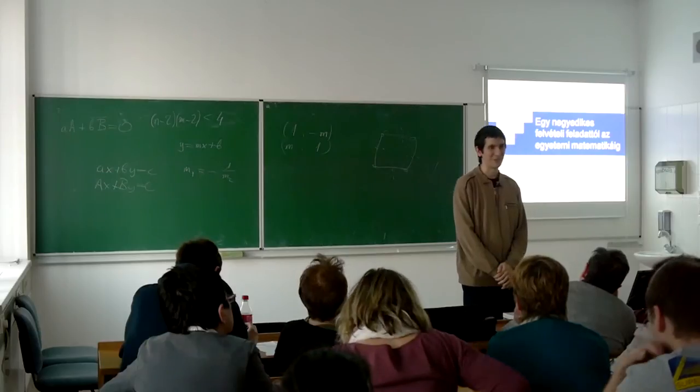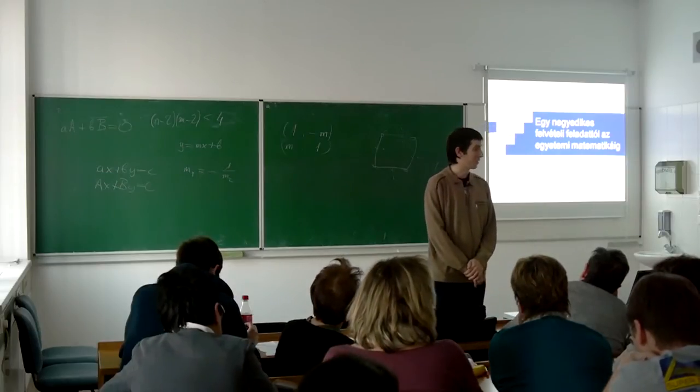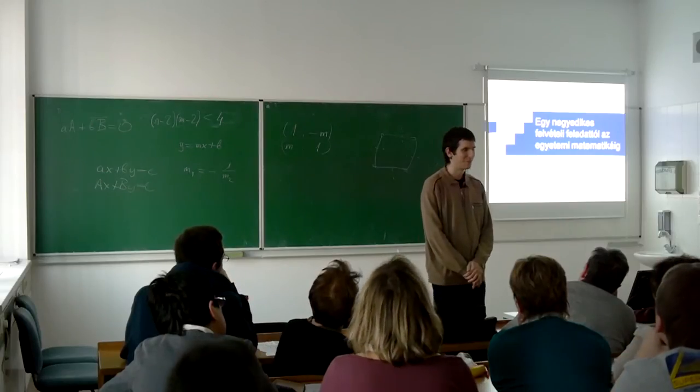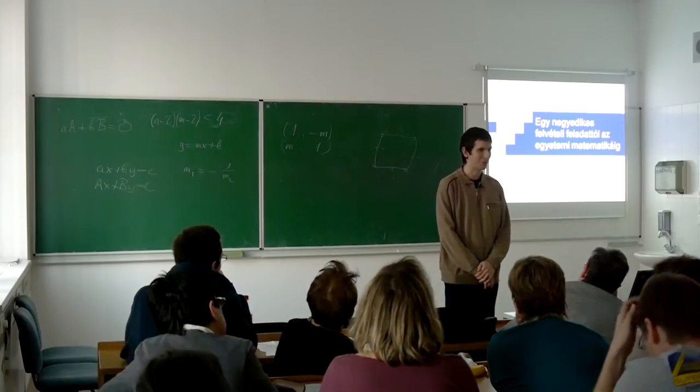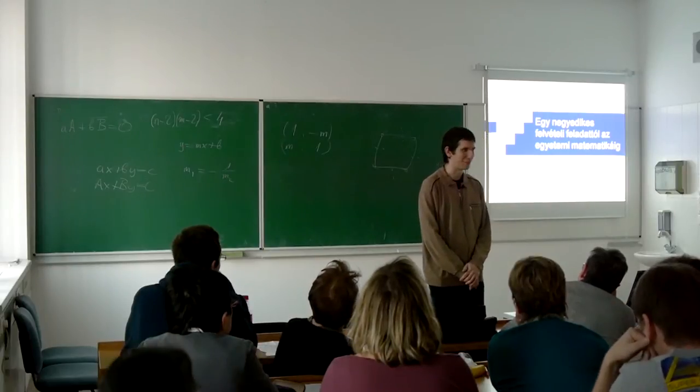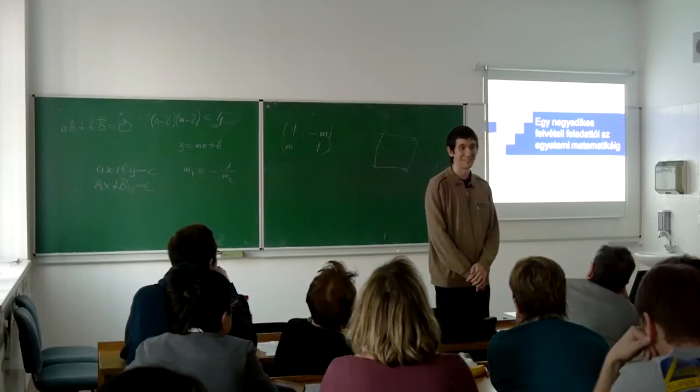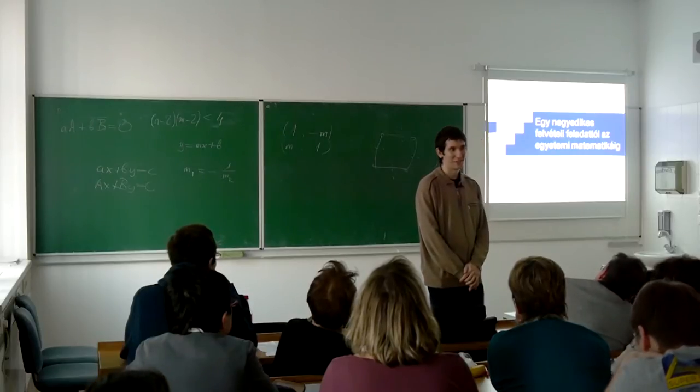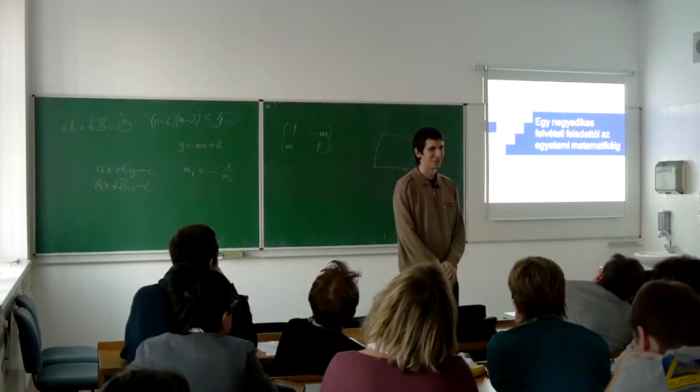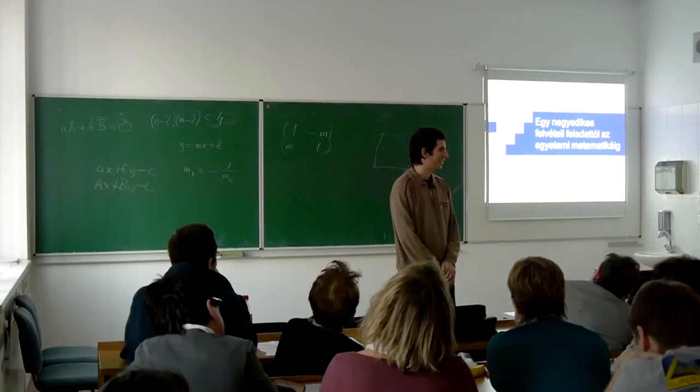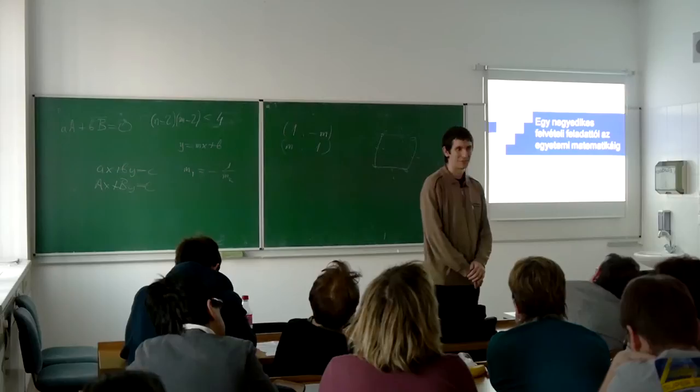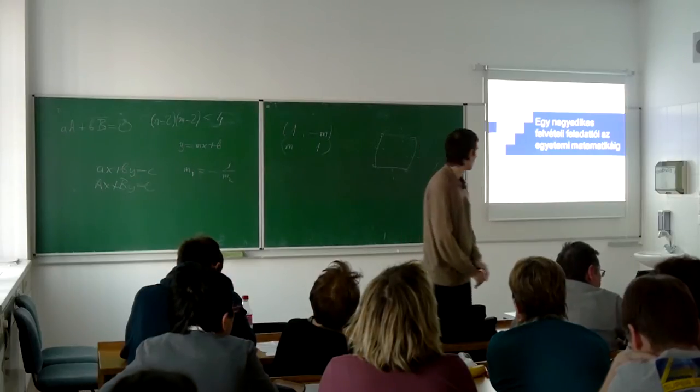Ma két olyan feladatot választottam, amik általános iskolai helyzetekben jelennek meg. Az egyik egy felvételi feladat, a másik egy Zrínyi verseny feladat, és tulajdonképpen speciális esetei elsőéves egyetemi gráfelmélet, illetve kombinatorikai tételeknek, amihez már akár érdeklődő középiskolásokat is el lehet juttatni egy szakkörön. A diasorom elérhető lesz majd a honlapon.